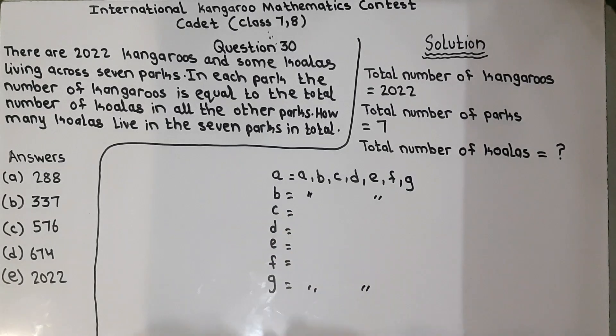Now, he is saying that in each park, we have to find the total number of koalas living in the other parks. So if I write the statement in mathematical form, it will take the form like this: A plus B plus C plus D plus E plus F plus G is equal to 6 multiplied by this whole statement.